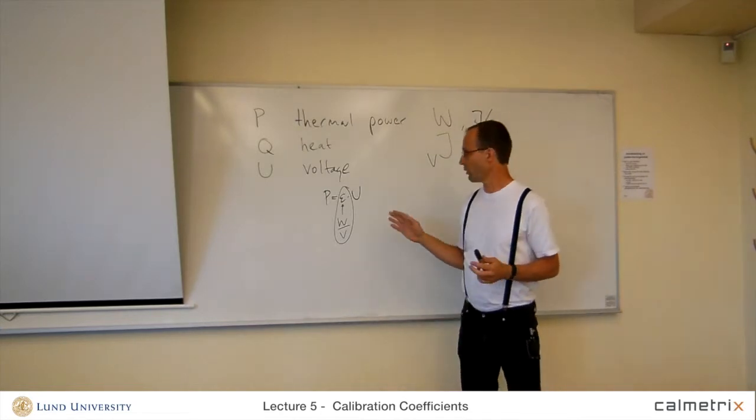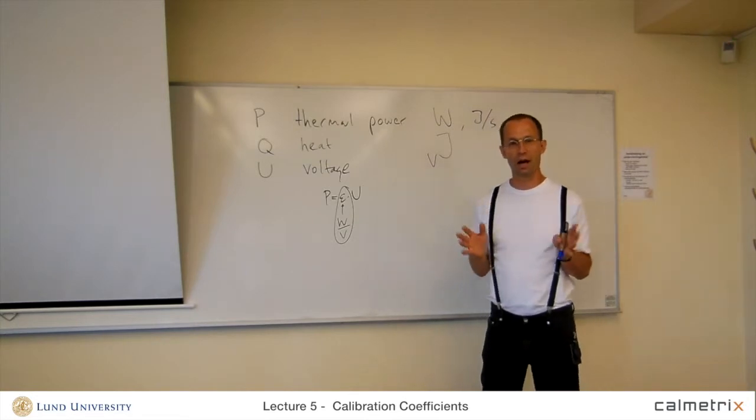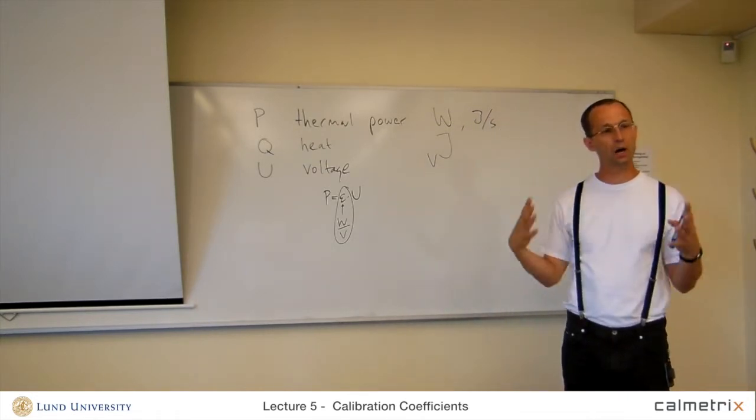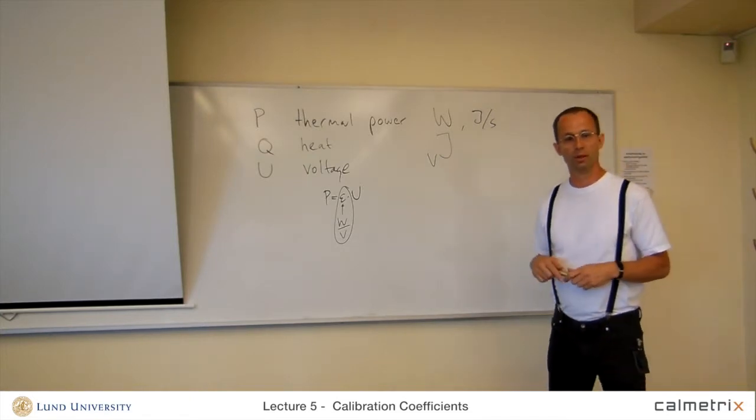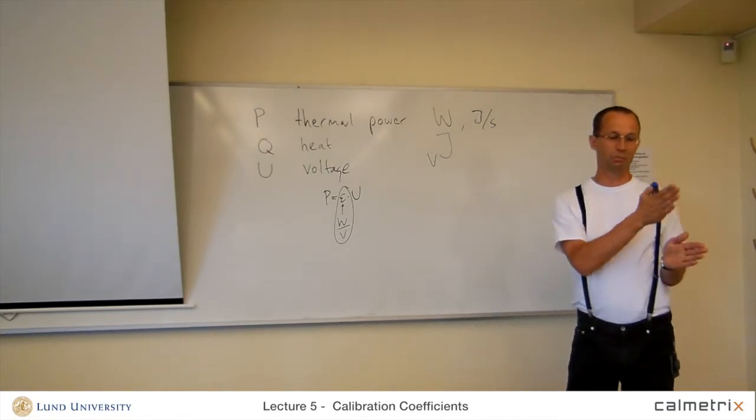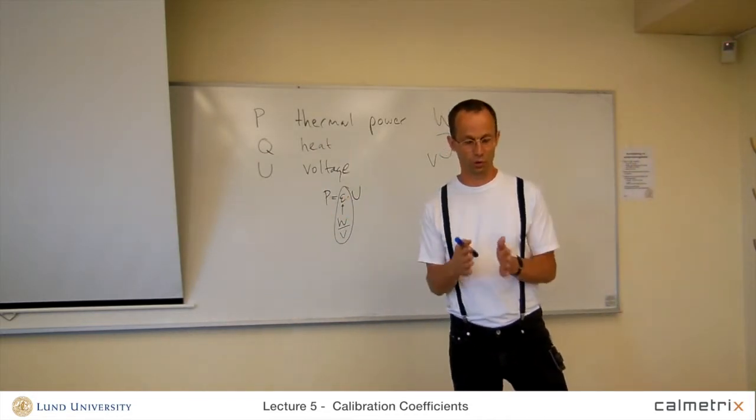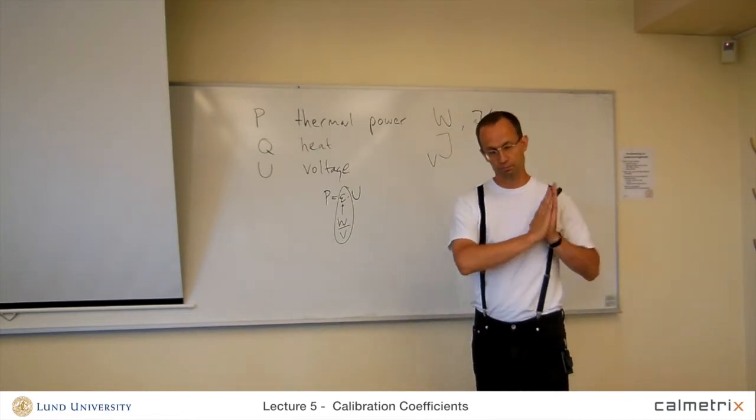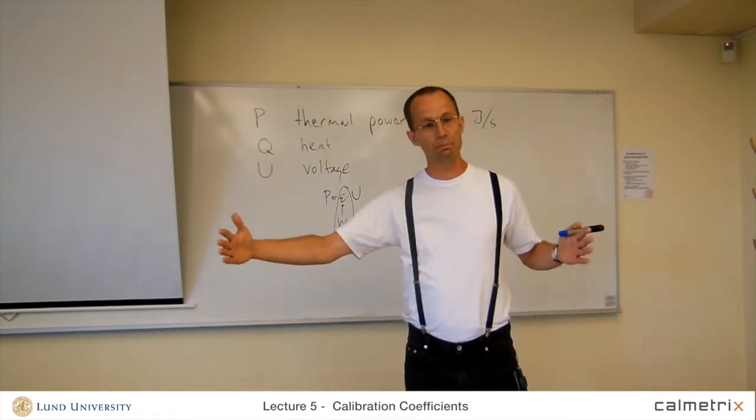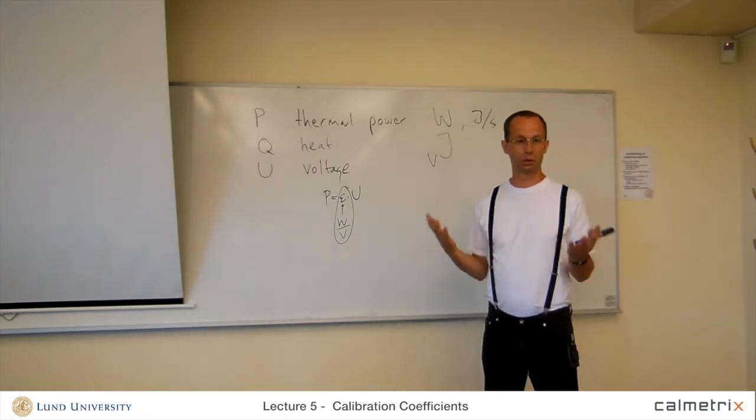So the question of how often you need to measure the calibration coefficient or baseline is actually more a question of how much data are you prepared to lose. Because you have to make a calibration before and a calibration after your measurement, and these calibration coefficients should be the same. Then you know that in this time period, the calibration coefficient was constant. Everything was good.